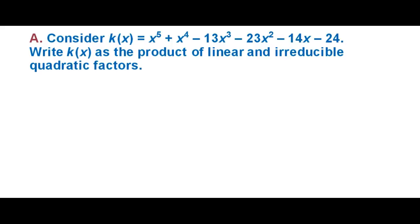For this tutorial, we're going to look at some ways to factor a polynomial down into simpler quadratic or linear expressions or factors. In this case, we have k(x) = x^5 + x^4 - 13x^3 - 23x^2 - 14x - 24.